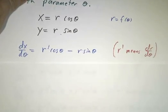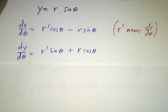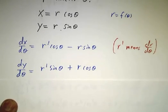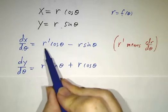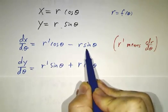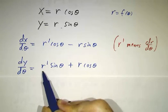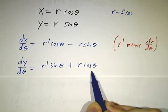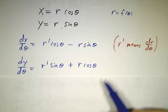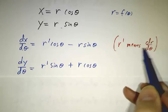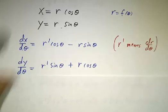And then you can figure out the derivative of x and the derivative of y. r cosine θ by the product rule is r prime cosine θ minus r sine θ. The derivative of r sine θ is r prime sine θ plus r cosine θ, where r prime just means dr dθ. Okay?